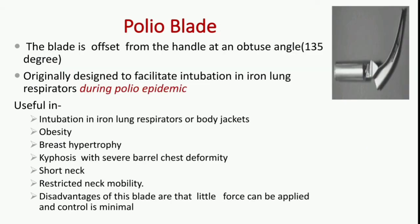Next is the polio blade. The blade is offset from the handle at an obtuse angle of 135 degrees. Originally designed to facilitate intubation in iron lung respirators during the polio epidemic, it is useful in iron lung respirators or body jackets, in obese patients, in cases of breast hypertrophy, kyphosis with severe barrel chest deformity, and persons with short neck and restricted neck mobility. The disadvantages are that little force can be applied and control is minimal.